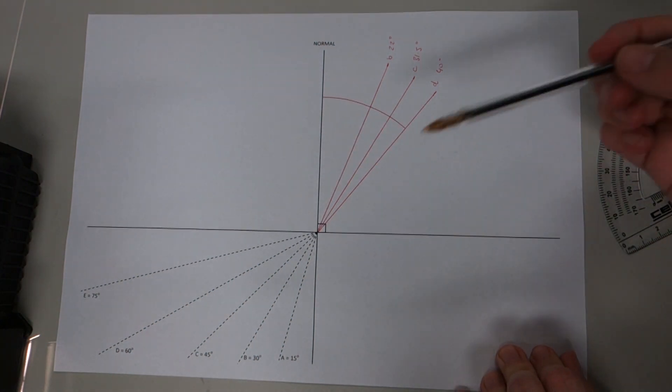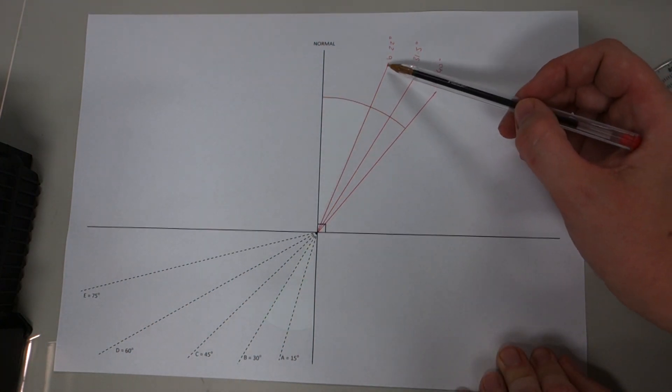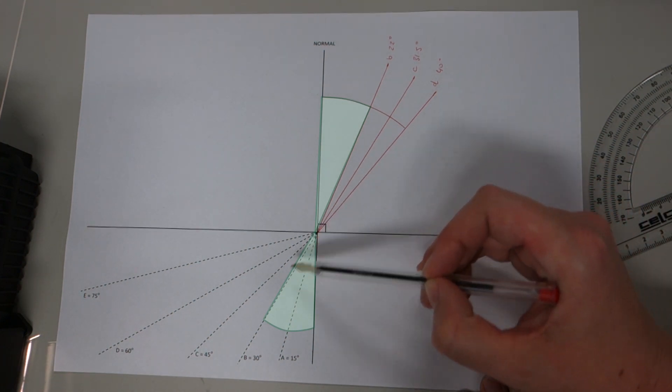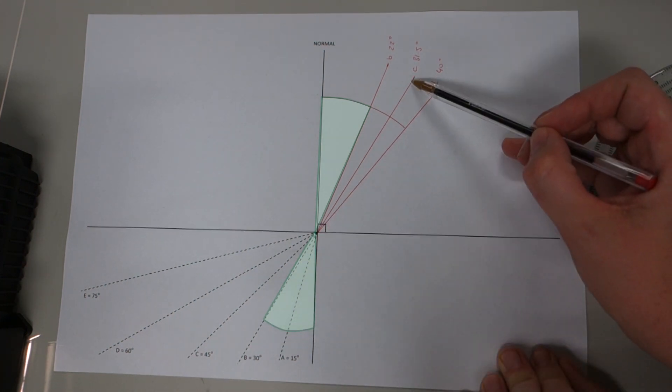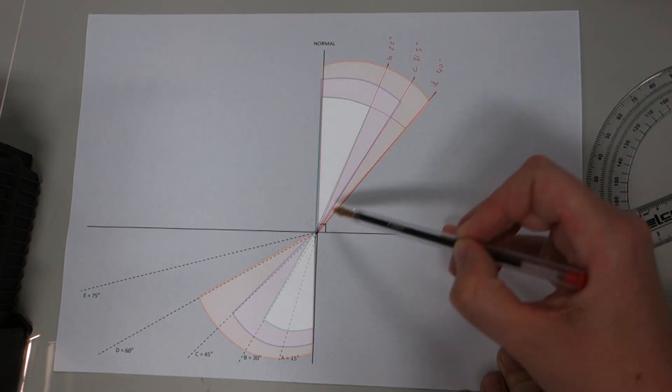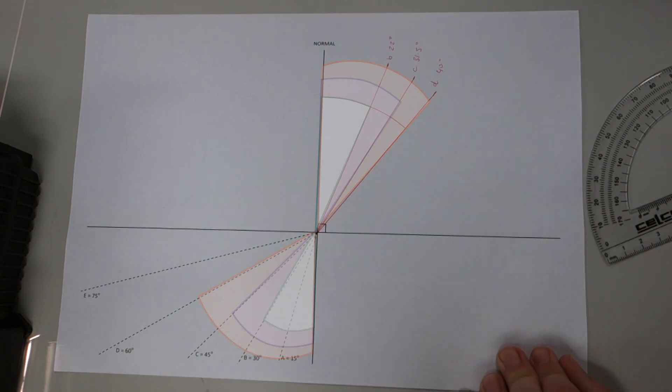And we already know, because I've written them down here, that B, 22 degrees is going to go with B, 30 degrees, C is C and D is D when you do your calculation.